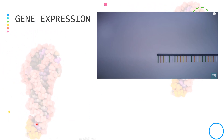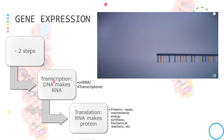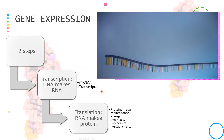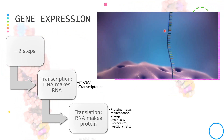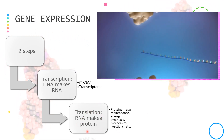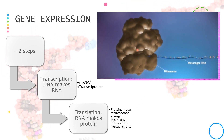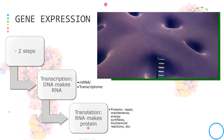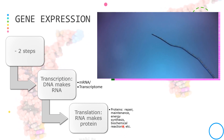Gene expression has two steps. The first step is transcription that happens inside the nucleus, where the information in the DNA is copied into an mRNA. Geneticists now use the word transcriptome to refer to the mRNA content of the cell. The mRNA then leaves the nucleus and goes out into the cytoplasm in preparation for the second step, which is translation — where the message of the mRNA is decoded in a ribosome to produce a specific amino acid chain or polypeptide. Proteins, the end product of translation, are needed in repair, maintenance, energy synthesis, biochemical reactions, and more.